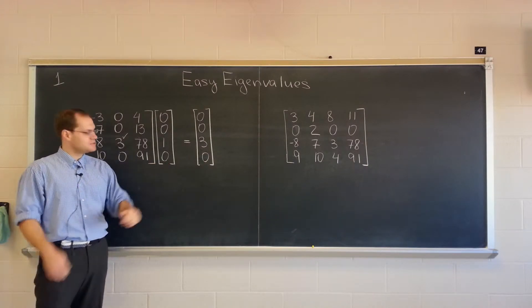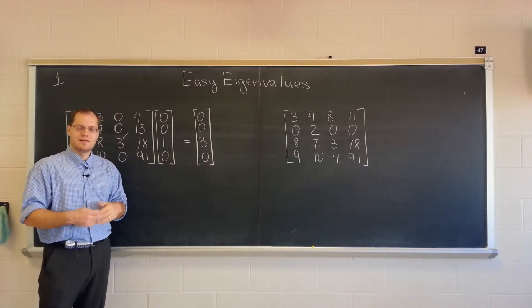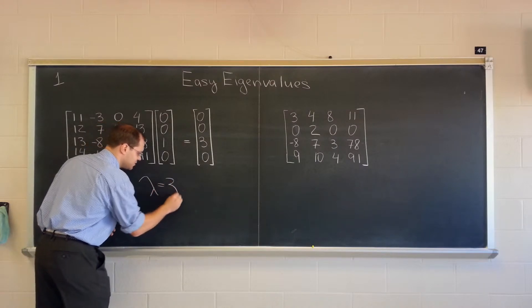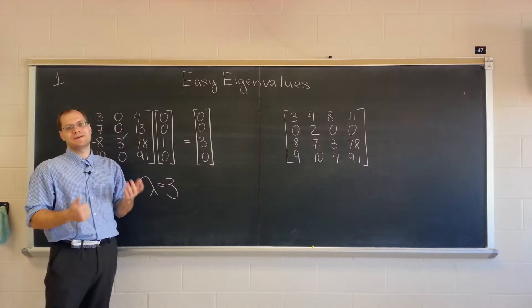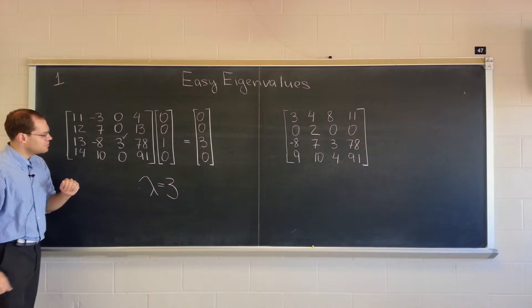And because there is this relationship between the output and the input, that multiple is called the eigenvalue. So one of the eigenvalues is three, and this is the corresponding eigenvector. So a very nice situation. So that's feature number one.